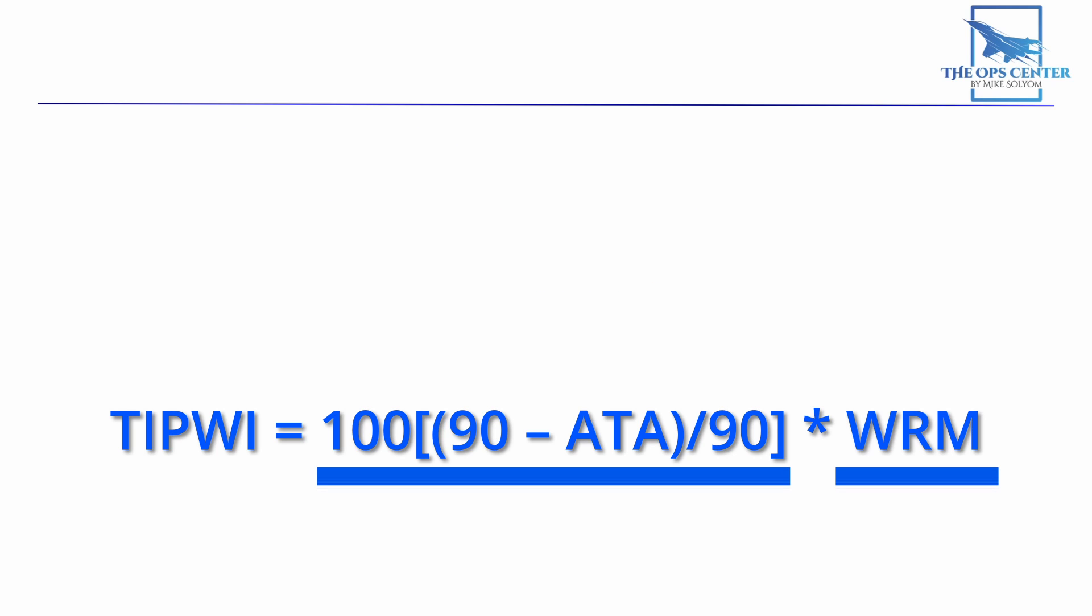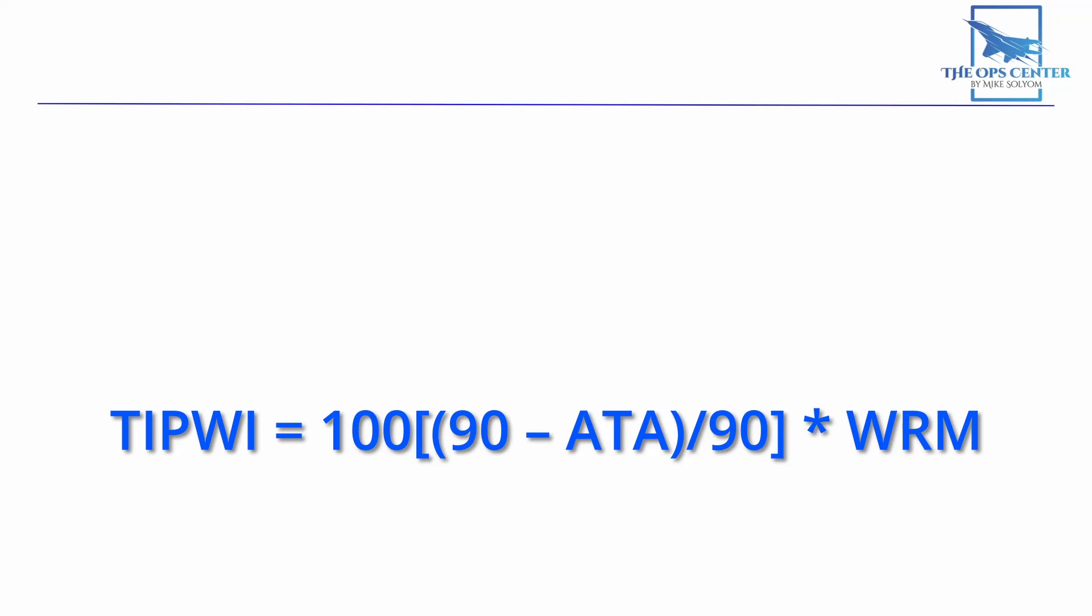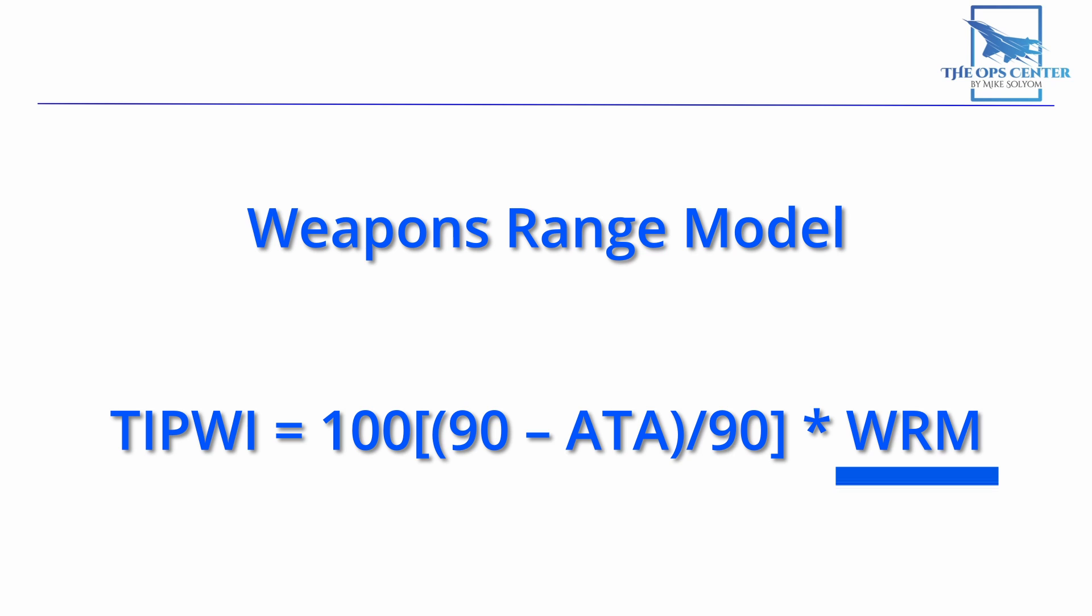This formula can be broken into two parts. This first part is based upon antenna train angle, which we covered in this video. Basically, it's the angle off the nose of the launch platform. The second part is the weapons range model, which is a big chart centered on the aircraft's angle off tail, or AOT.